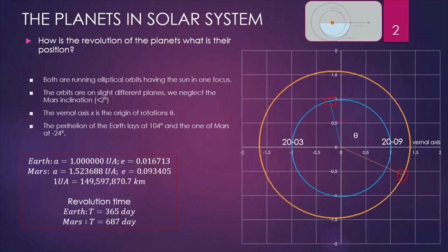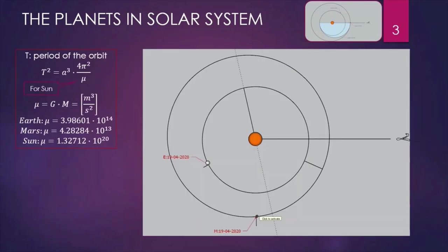Here are some astronomical parameters of the two planets, where A is the major semi-axis of the ellipse and E is its eccentricity. The astronomical unit is 150 million kilometers more or less, and this is important for all the considerations we are doing on the orbits. The revolution time for the Earth is 365 days, and for Mars is 687 days. This information we can also get from Kepler's third law, saying that the square of the revolution time is proportional to the cube of the semi-axis.